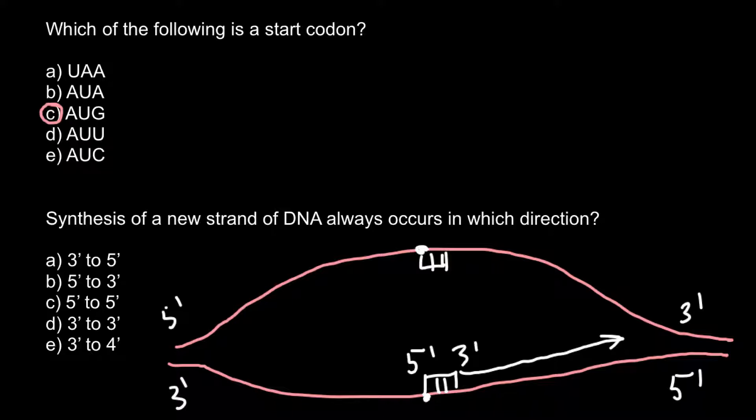So more primers, RNA primers would be added here. And primers also would have five prime end and three prime end. So five prime end and three prime end here.